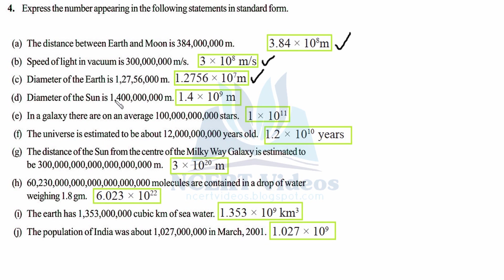Part (d): diameter of the Sun. Write 1.4 as the significant part. Count all the digits: 3, 6, 7, 8, 9, 10 — then 10 minus 1 is 9. So the diameter of the Sun is 1.4 × 10⁹ meters. Part (e): in a galaxy there are on average a very large number of stars. The only significant digit is 1, and counting all digits: 1, 2, 3, 4 — giving 4, and 4 minus... wait: 12 total, 12 minus 1 is 11. So 1 × 10¹¹ stars.